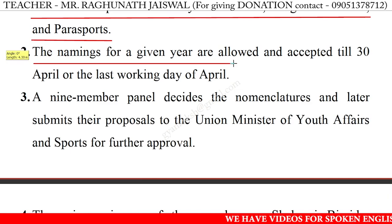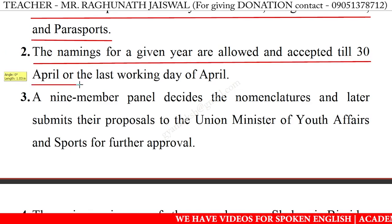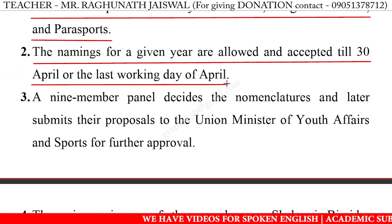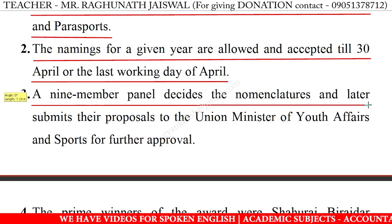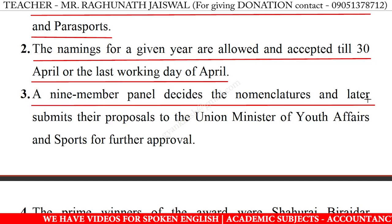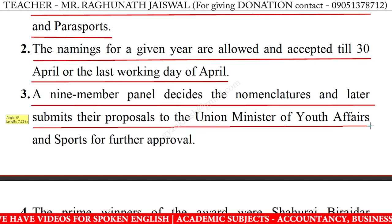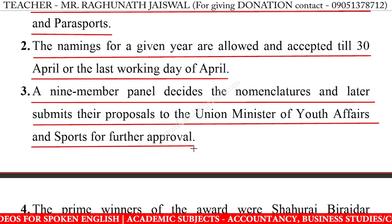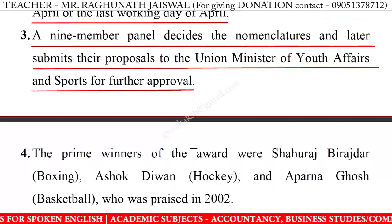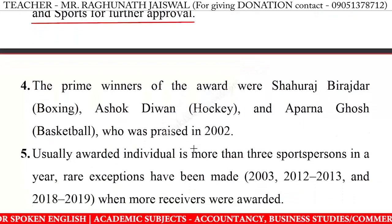The nominations for a given year are allowed and accepted till 30th April or the last working day of April. A nine-member panel decides the nominations and later submits their proposal to the Union Minister of Youth Affairs and Sports for further approval.